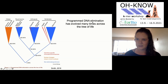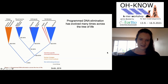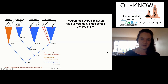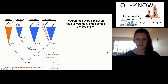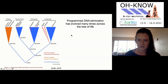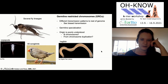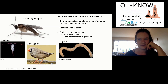Germline-restricted chromosomes are part of a larger phenomenon known as programmed DNA elimination. Basically, in species with programmed DNA elimination, either portions of the genome or entire chromosomes are eliminated from somatic cells early in development. This results in some portions of the genome being restricted to the germ cells throughout most of the organism's life. This has actually evolved in quite a few different lineages — all the lineages shown in red on this phylogeny have programmed DNA elimination.